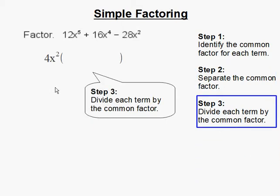Step 3: Divide each term by the common factor. Now I'm going to start with the first term. When I take out 4x² from this first term, what I'm doing is I'm dividing 12 by 4, that gets me 3. Then x to the fifth divided by x to the second, that gets me x to the third. And that's going to be my first term within the parentheses.